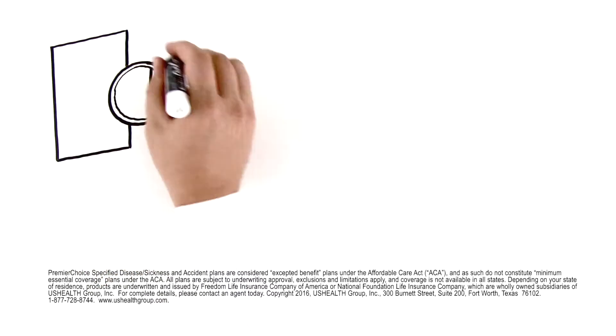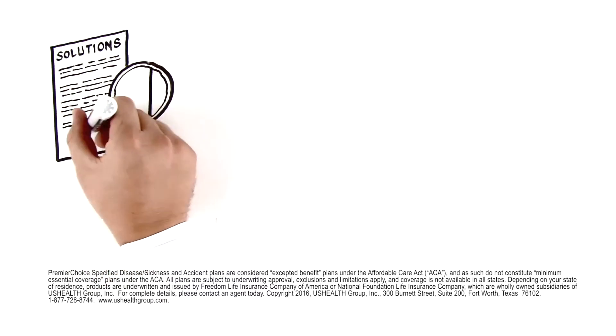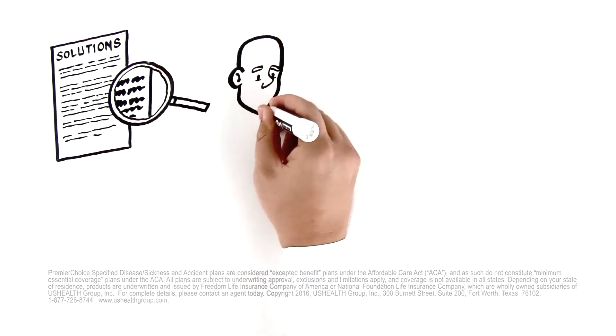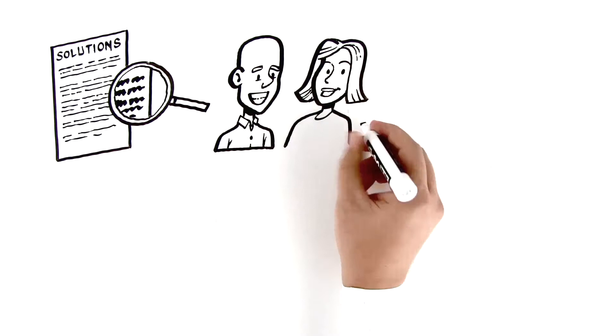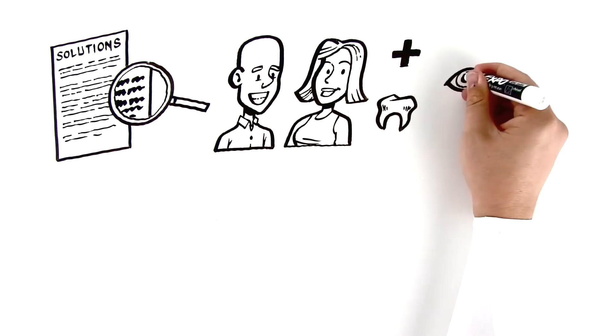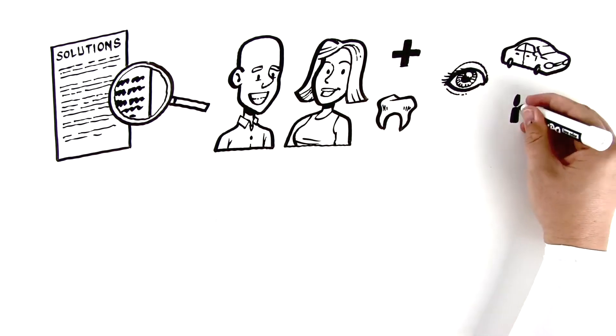We offer solutions through our insurance companies that can't be found anywhere else. Our 2,000+ agents will help you pick the best plan that best meets your needs, including medical, dental, vision, accident, and life insurance.